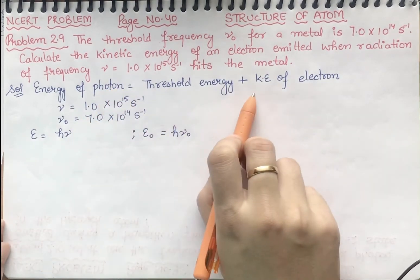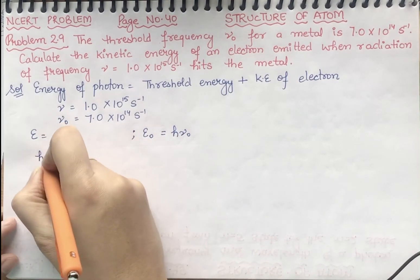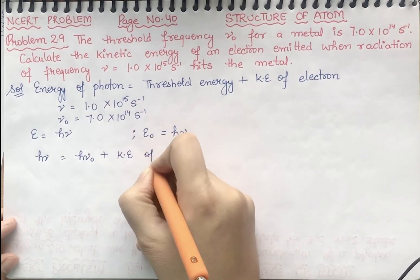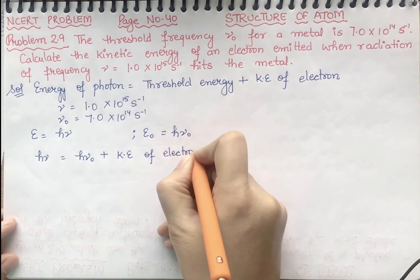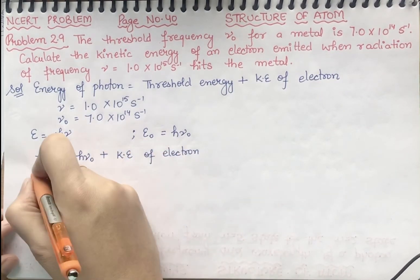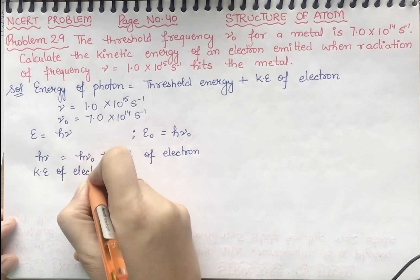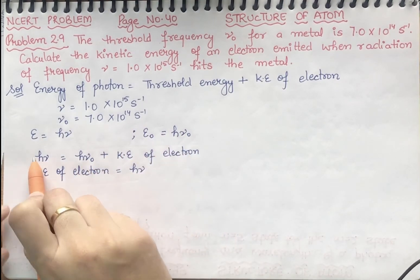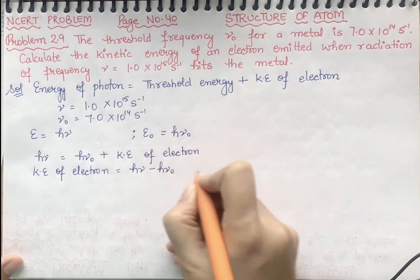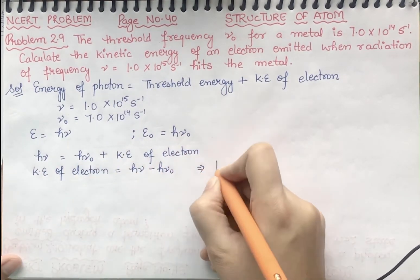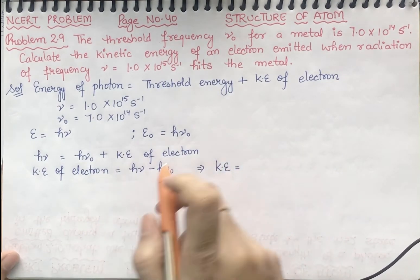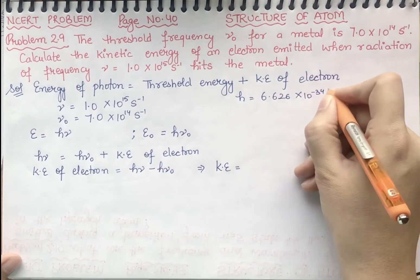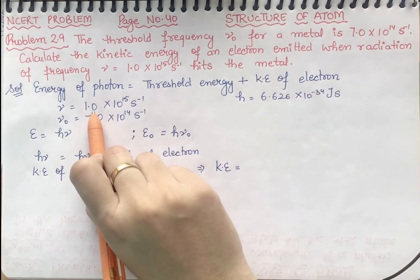Now we will put the notations: hν = hν₀ + kinetic energy of electron. We have to find kinetic energy of electron, so we will take this value to one side. Kinetic energy of electron = hν − hν₀. This value is positive; when we take it to the other side it becomes negative.